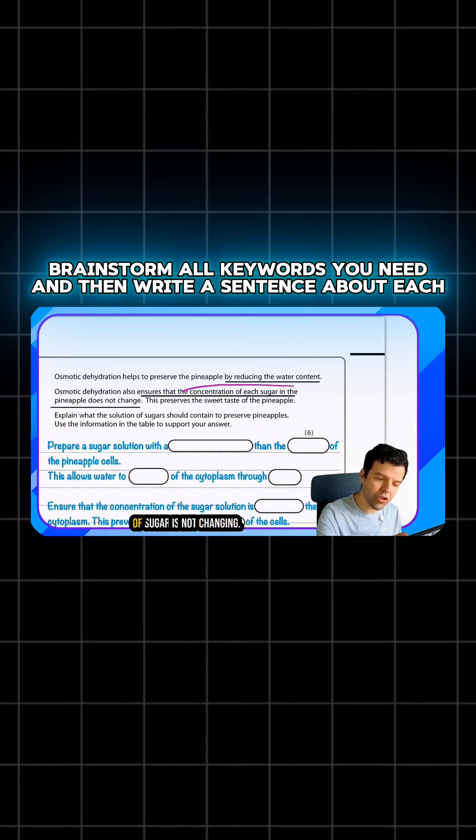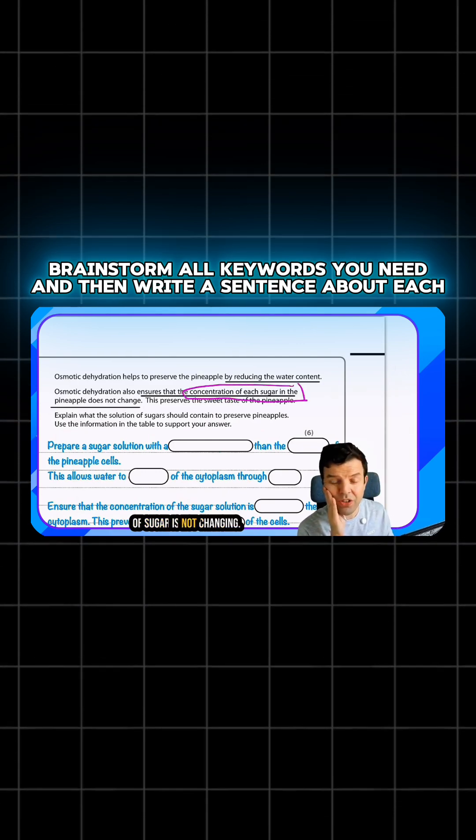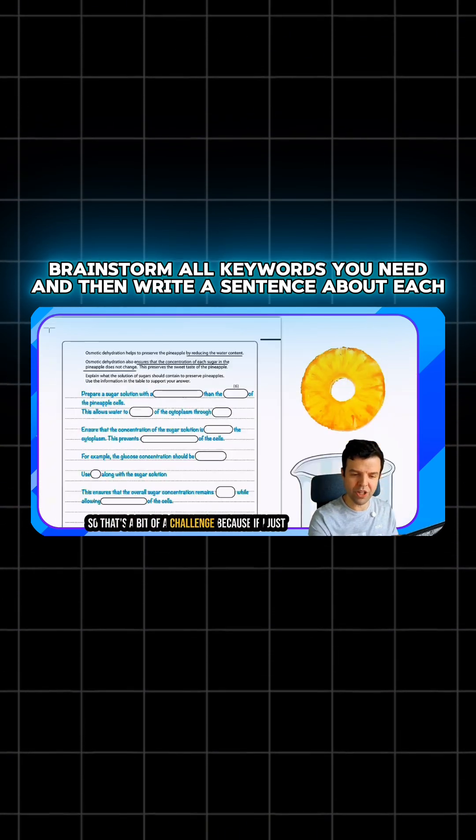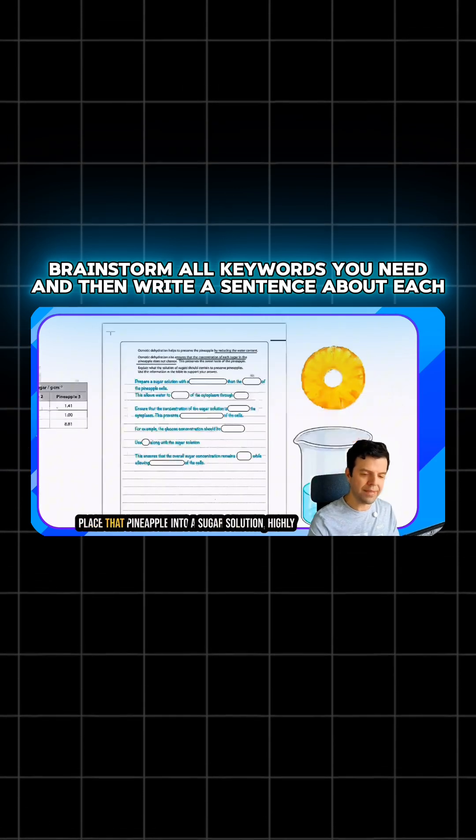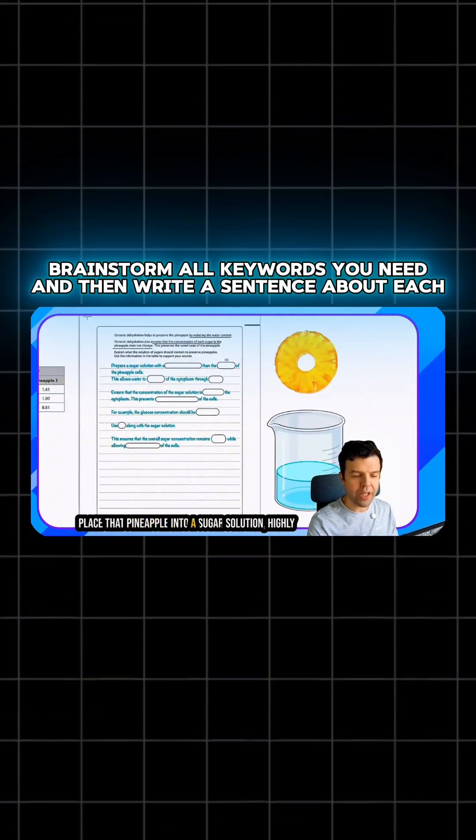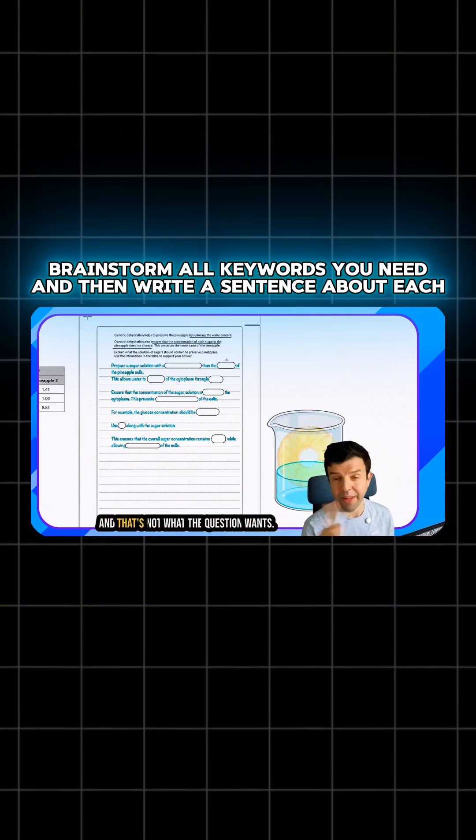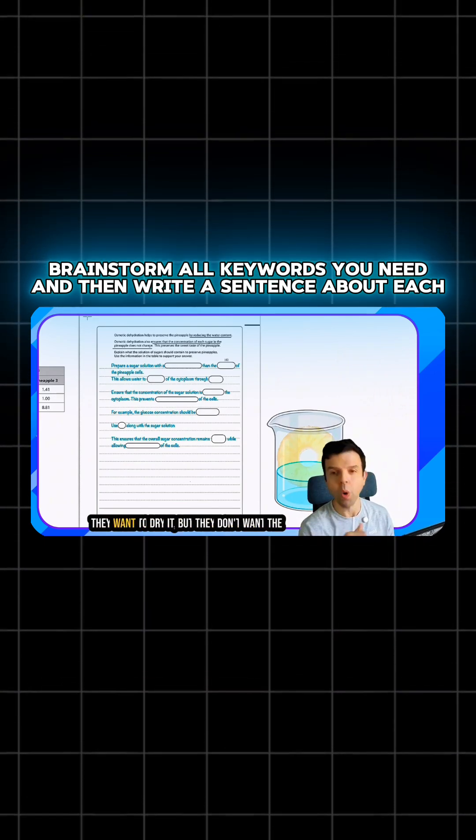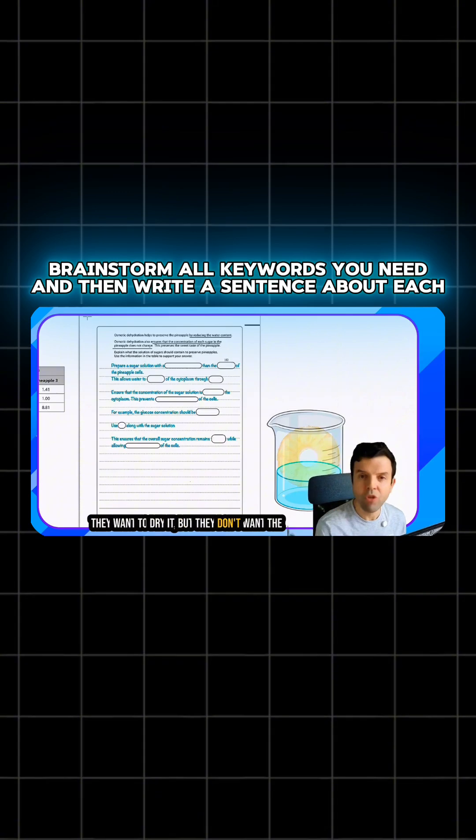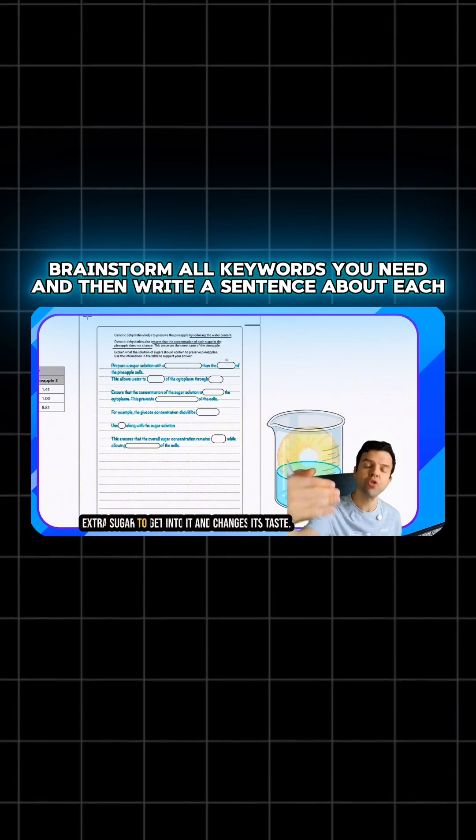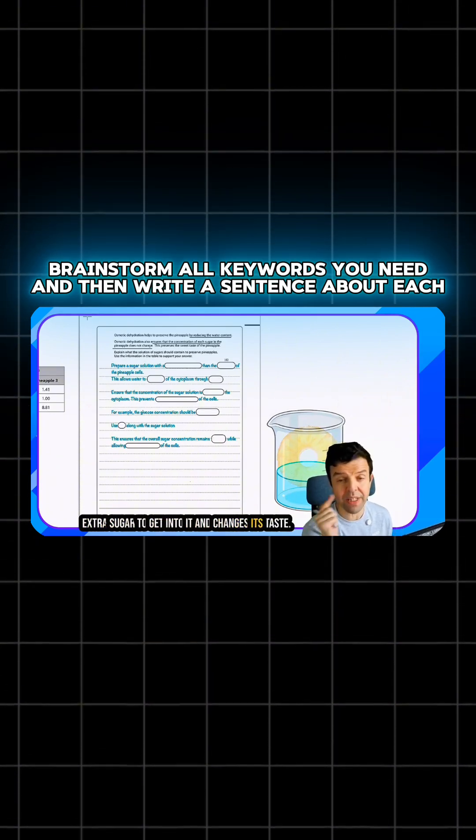You need the water potential in the solution to be as low as possible so the fruit will dry up. Ensure that the concentration of sugar is not changing. That's a bit of a challenge because if I just place that pineapple into a highly concentrated sugar solution, it's going to get sweeter. And that's not what the question wants. They want to dry it, but they don't want the extra sugar to get into it and change its taste.